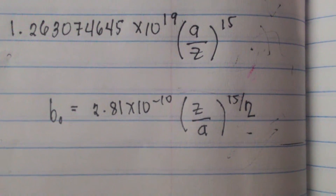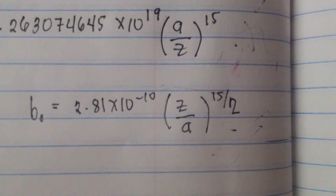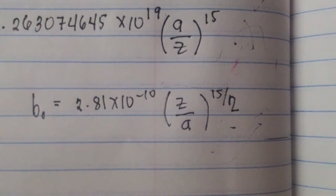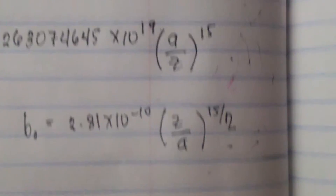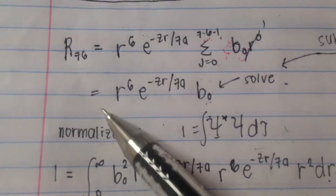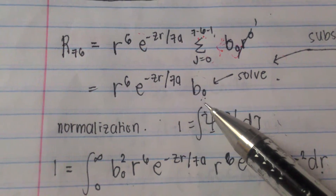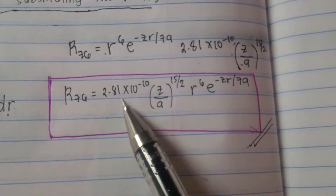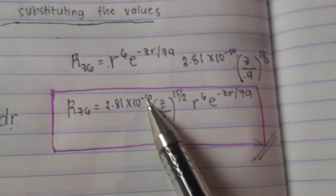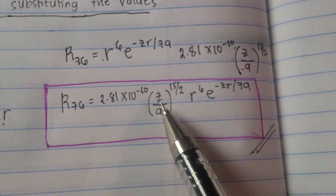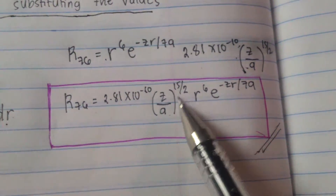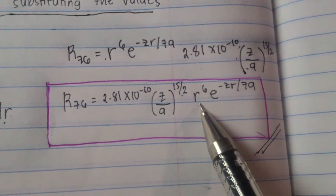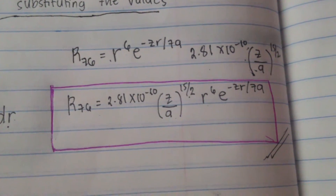Now we have the value for b₀ and can substitute it back into the radial function. The resulting radial function R₇₆ is equal to 2.81 times 10 raised to negative 10, times (z over a) raised to 15 over 2, times r raised to 6, times e raised to negative zr over 7a.